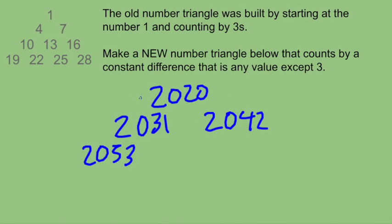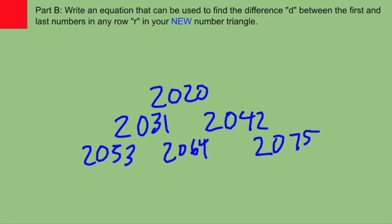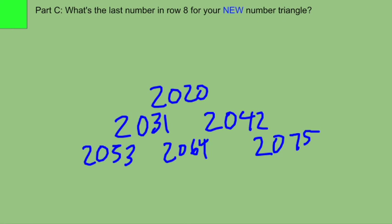Now you probably want to use smaller numbers. Maybe count by something that's easier than counting by 11s. But that's the idea. You're going to build a little triangle for yourself. Okay? Build the triangle. And then you're going to answer the rest of the questions based on your triangle, not the original triangle. Right? What's the difference? Can you come up with an equation for the differences? What's the last number in row 8? Cool.